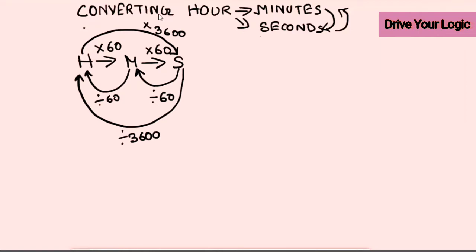Let's start with an example. Take 6 hours and convert to minutes. Hour to minute means multiply by 60, so: 6 × 60. Six times six is 36, add the zero — so 6 hours equals 360 minutes.